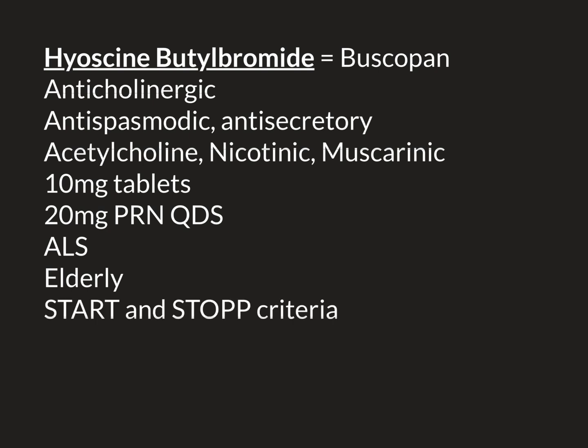There are famous guidelines for prescribing in elderly patients called the START and STOP criteria. The START criteria are guidelines for drugs you should consider prescribing in elderly people — drugs they might benefit from. The STOP criteria are guidelines for drugs that should ideally be avoided in elderly patients, or stopped if possible. You can Google the START and STOP criteria — they're very interesting to read. One of the STOP criteria is regular anticholinergics: if you see an elderly person on a regular anticholinergic, you should assess whether it is really necessary and whether it could be stopped.